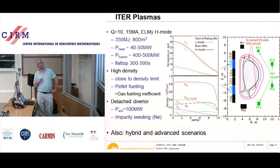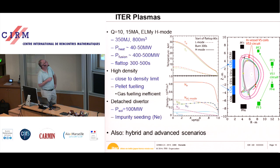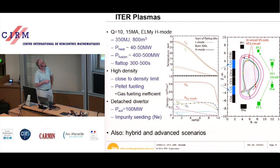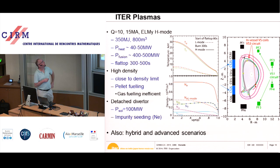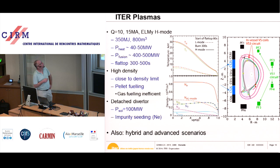The plasma energy will be about 350 megajoules. The volume is about 800 cubic meters. The externally applied heating power includes neutral beams at high energy, ICRH (ion cyclotron resonance heating), and electron cyclotron heating. We can inject up to 60 megawatts, but 40 to 50 should be enough. The fusion power will be 400 to 500 megawatts. Most goes to neutrons, which just escape. There will be about 100 megawatts of alpha power from fast helium particles, which also contribute to plasma heating.